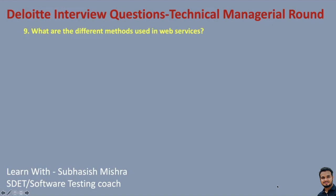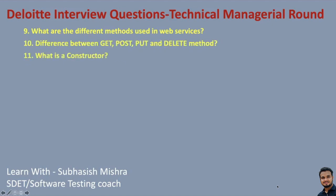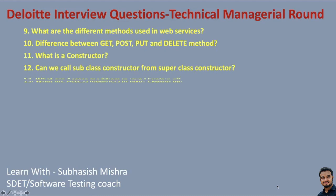What are the different methods used in web services? Questions around web services — what are the different methods you use? What is the difference between GET, POST, PUT, and DELETE methods? What is a constructor? Again, Java questions — what is a constructor? Can we call a subclass constructor from a superclass constructor? Fundamental questions to check your understanding. What are the access modifiers in Java and can you explain all of them?